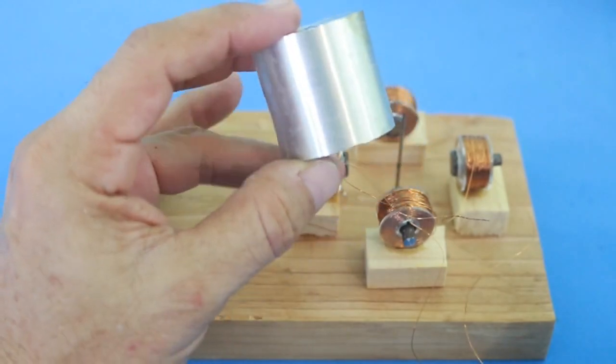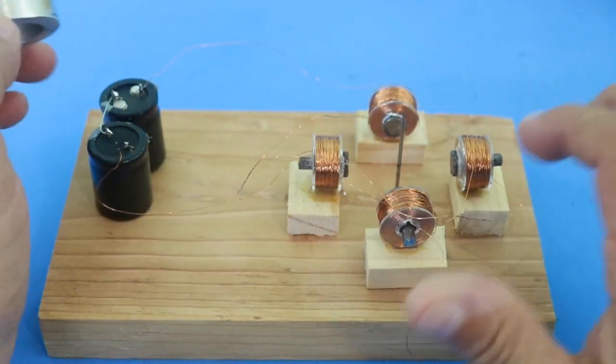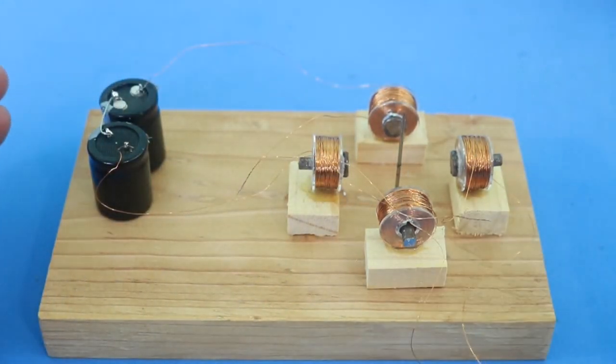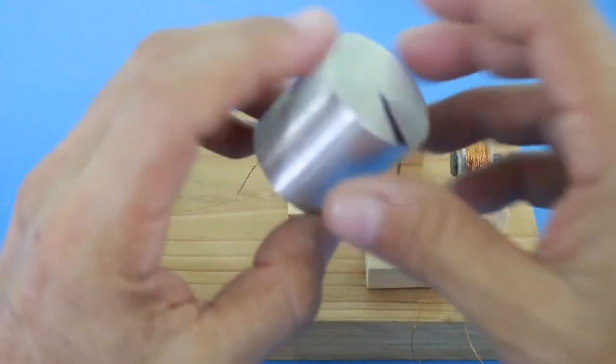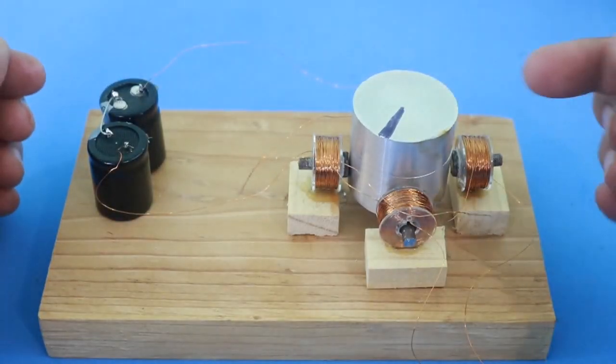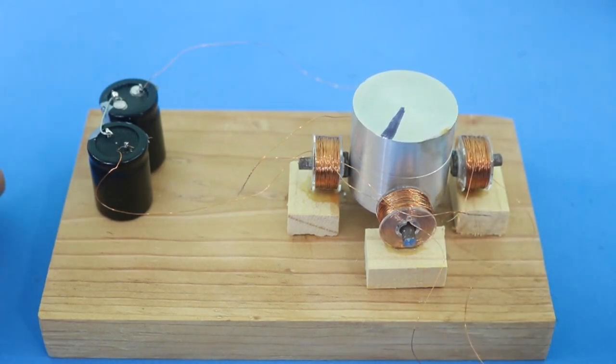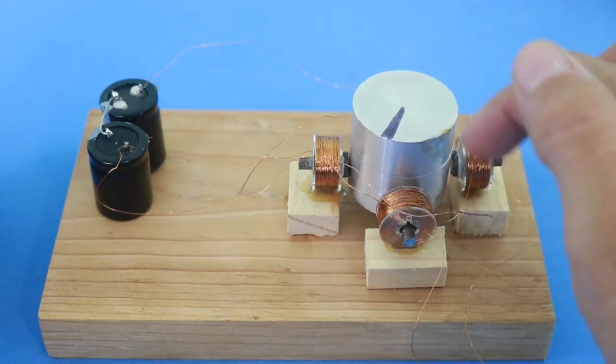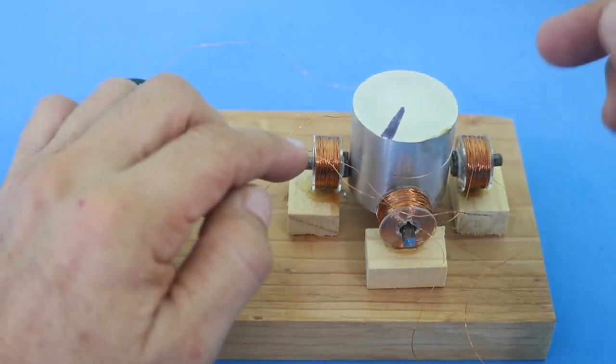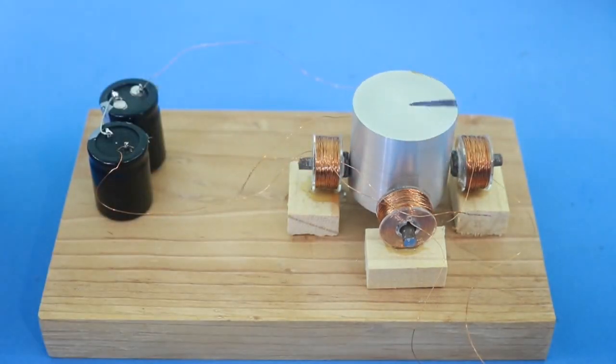Now, because of Lenz's law, the magnetic field of the rotor is opposed to the magnetic field created by the coil. So they repel each other. Now, this repulsion will only create a force in this direction that does not produce a rotation. However, since the magnetic field is rotating, therefore, a torque is created that makes the rotor rotate.